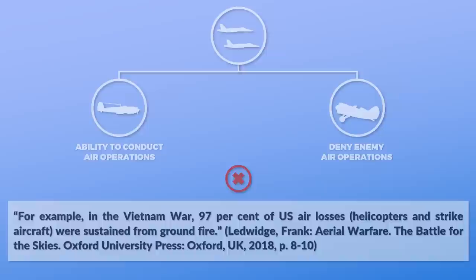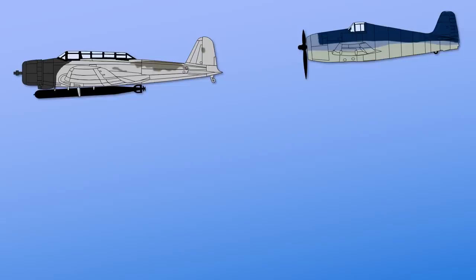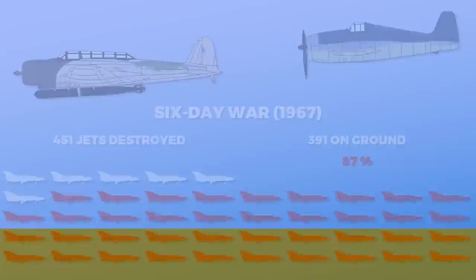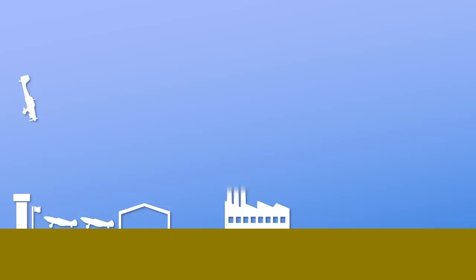There are several ways to achieve air superiority. The most direct approach is to attack the enemy's aircraft directly, both in the air and on the ground. One prime example was the Israeli Air Force in 1967, when it destroyed 451 jets — 391 of them, almost 87%, on the ground. A more indirect approach would be to destroy logistical infrastructure like air bases and ground crews,